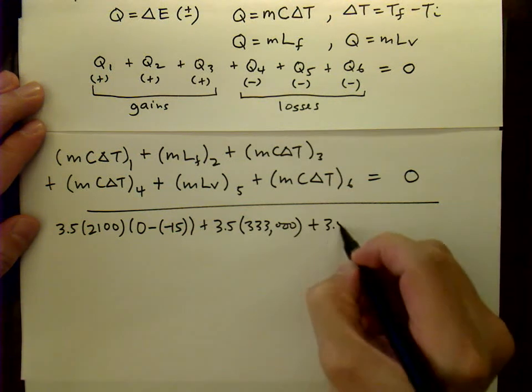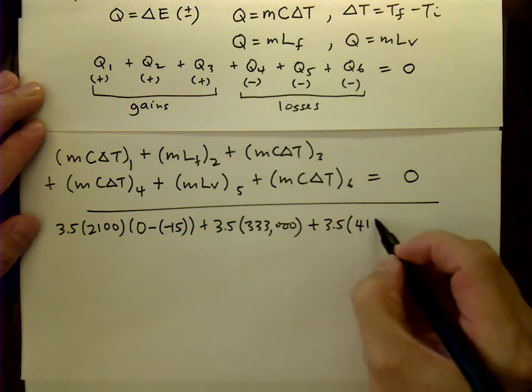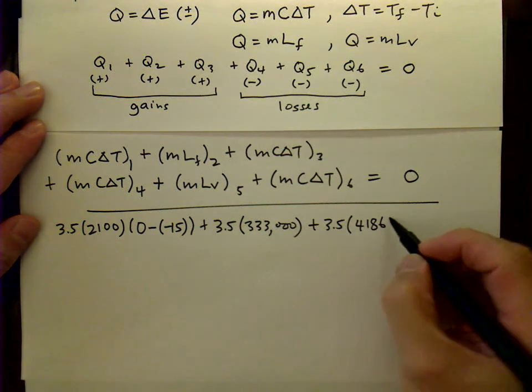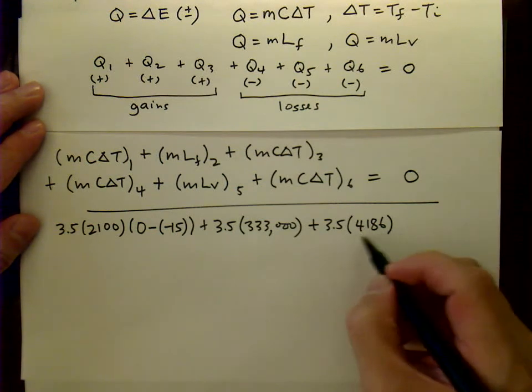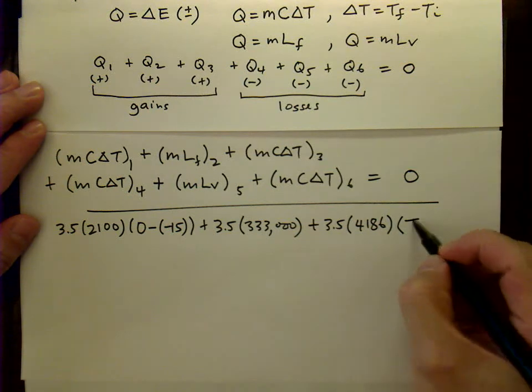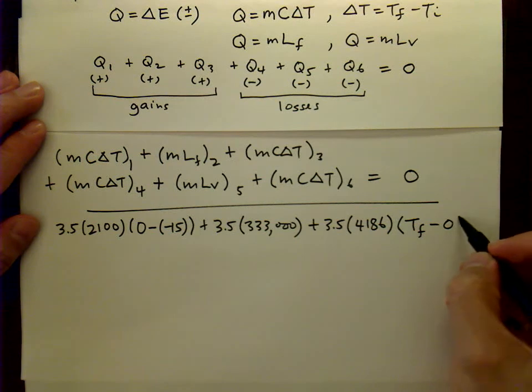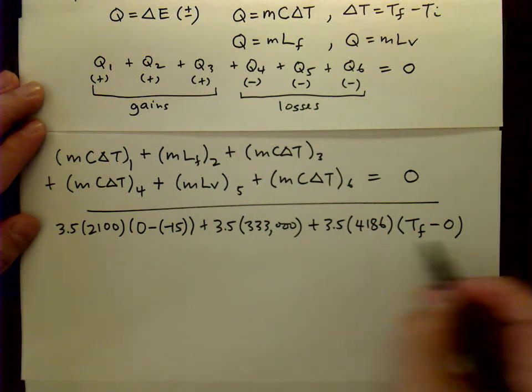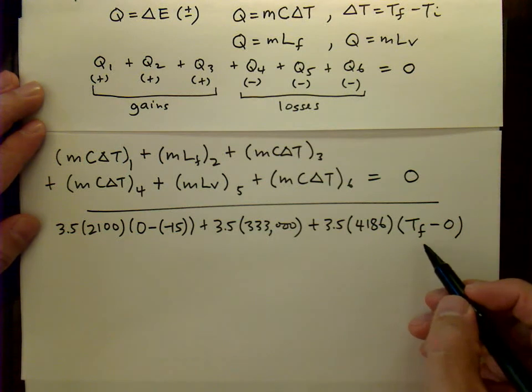And finally, the MC delta T term for the water that used to be ice. And because it's now in liquid form, we're using the heat capacity of water. And the change in temperature is the final temperature minus the initial temperature, which in this case is zero degrees C. Remember, this is the MC delta T term for the water going from zero degrees C to its final temperature.